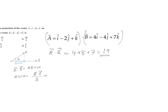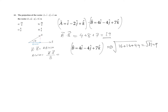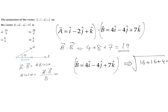Now we also require the magnitude of vector b. The magnitude of vector b is the square root of its components squared: 4 squared is 16, plus 4 squared is 16, plus 7 squared is 49. This equals root of 81, which is 9. Substituting, the projection is a dot b divided by b, which is 19 divided by 9.